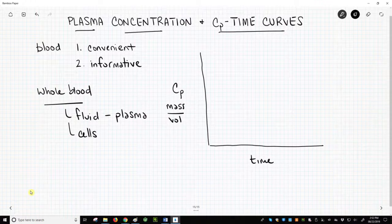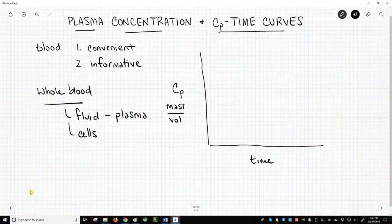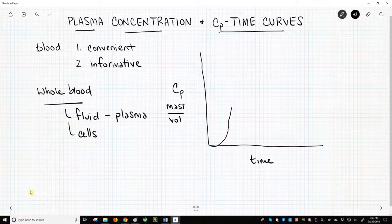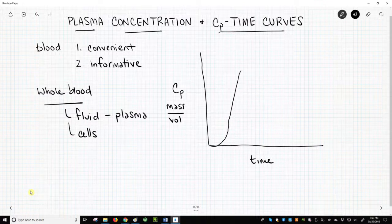When a patient takes a drug in pill form, the plasma concentration, the y-axis, starts at zero. The drug enters the stomach and, perhaps later, the small intestine. In a short amount of time, the time being the x-axis, the drug will begin to be taken up from the digestive system and enter the bloodstream of the patient.